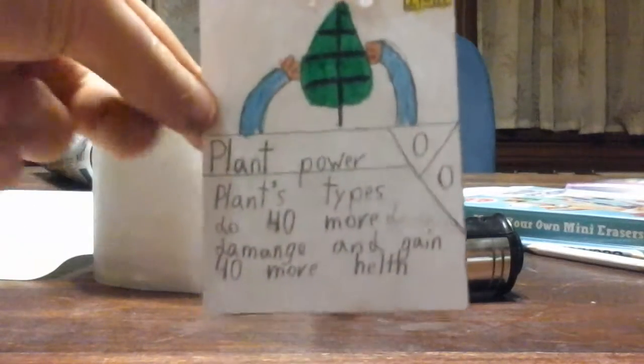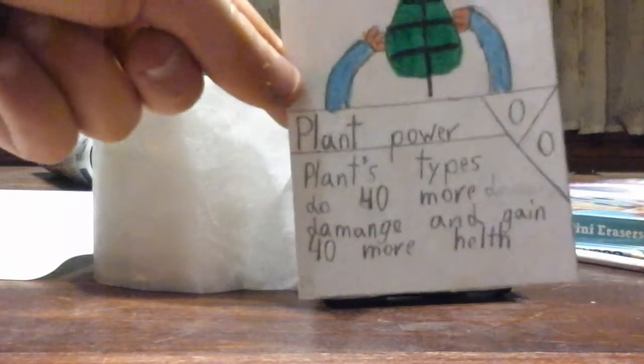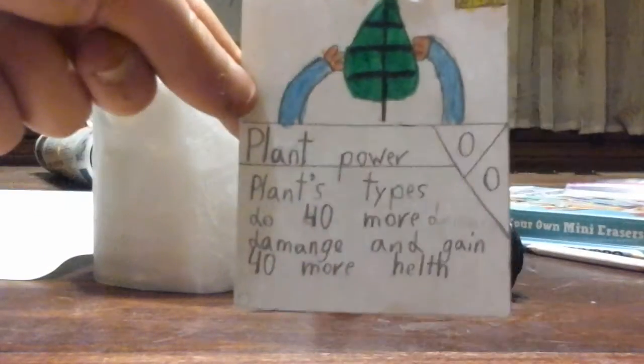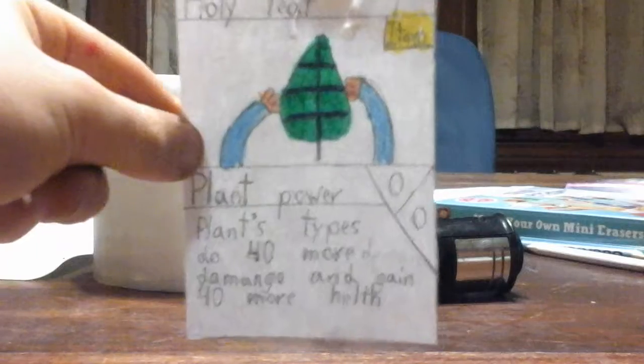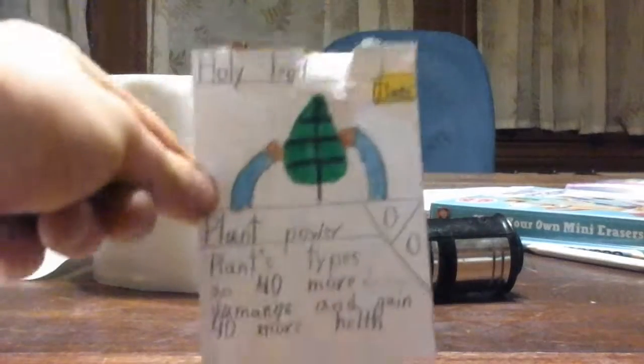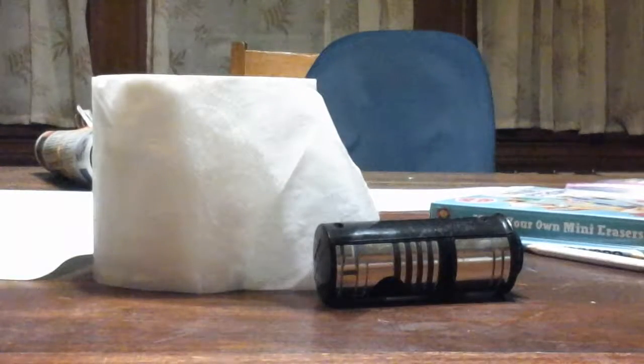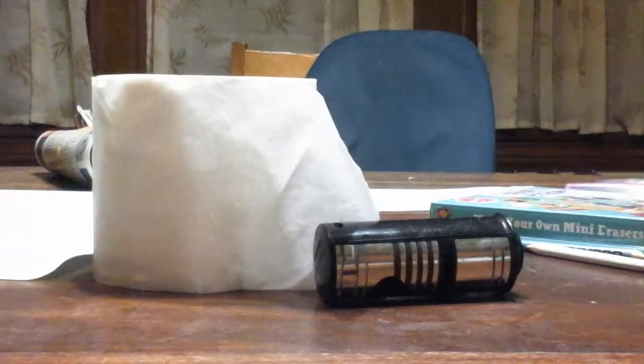Attached to the package, attached to the package, I glued. Oh there we go, I ruined this really good card. I just ruined the holy leaf, let me just ripped it. I'm going to take this. It's an item, Plant Power. Plant types do 40 more damage and gain 40 more health, zero damage and zero health because it's an item. These are the best to get. I just ruined it.